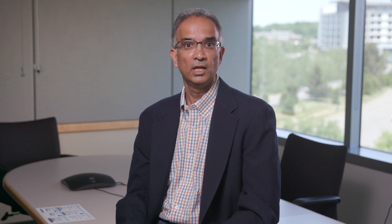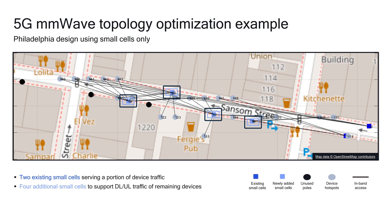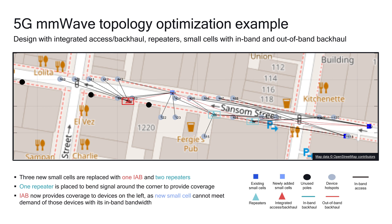We can perform comprehensive network analysis to show the cost and performance of different deployment options. We use another city, Philadelphia, to illustrate this. Here we see an example using small cells only, where a fiber drop is connected to each new small cell location. A second deployment option utilizes smart repeaters and integrated access and backhaul in addition to small cells, which can simplify deployment, deliver enhanced performance, and additional cost savings.